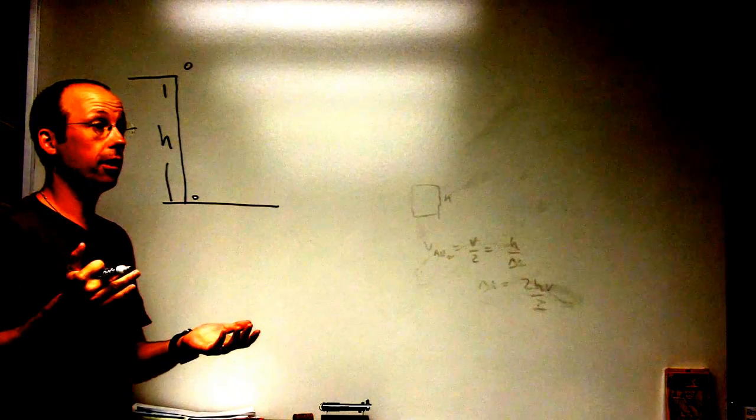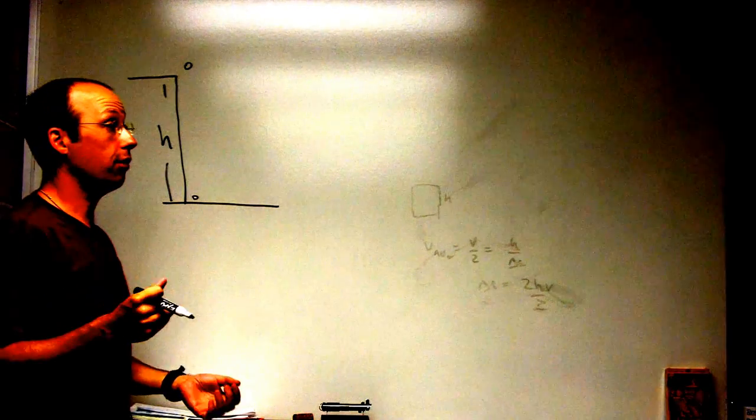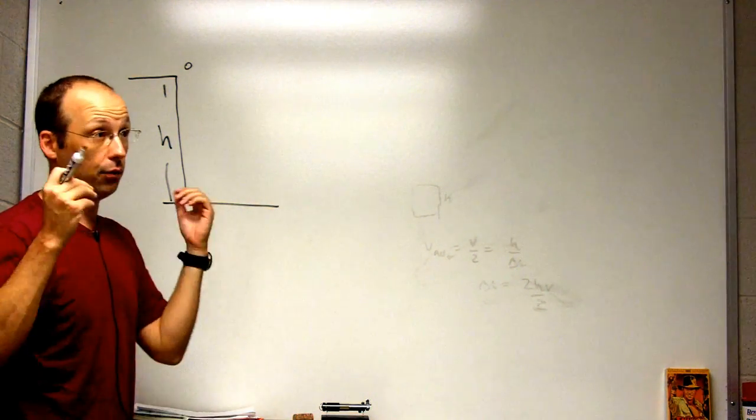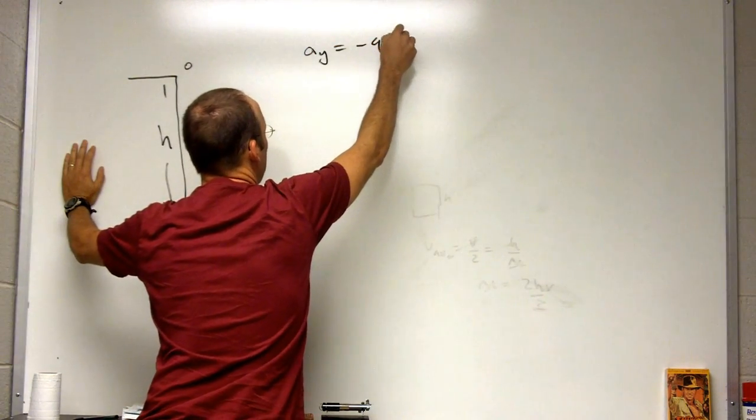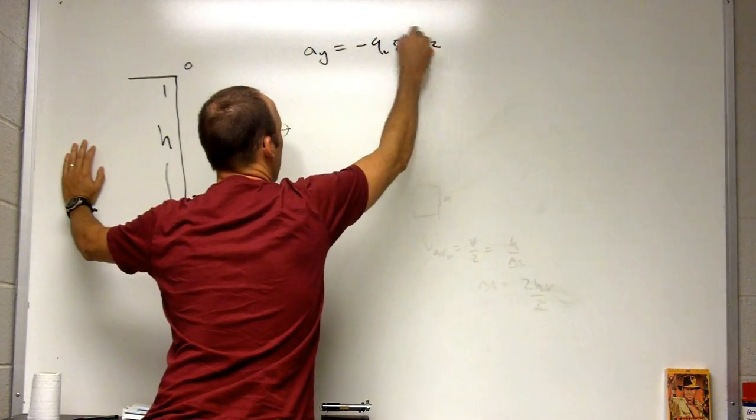I'm not sure what part of the curriculum you would insert this in. If you talk about kinematics and just say things that fall have an acceleration in the y direction of negative 9.8 meters per second squared, then you could just do that.